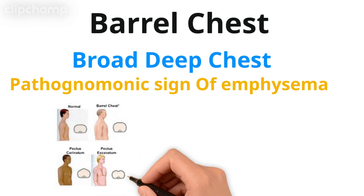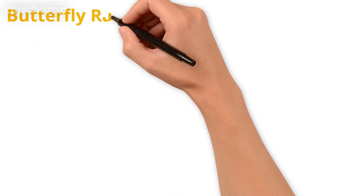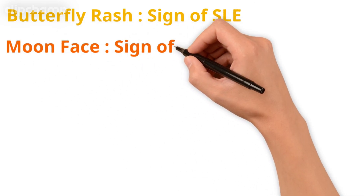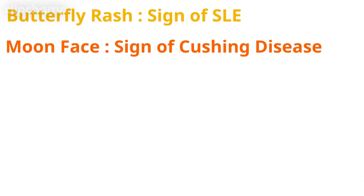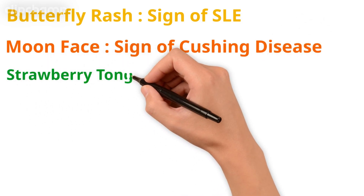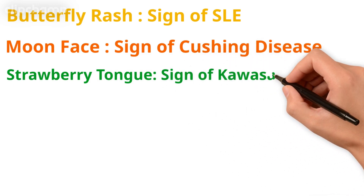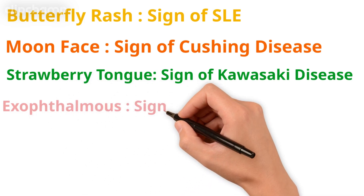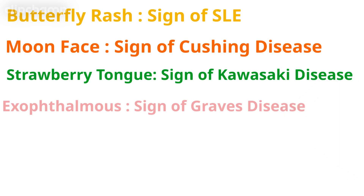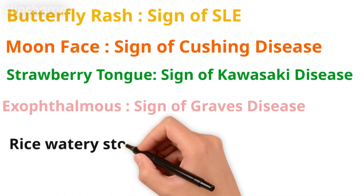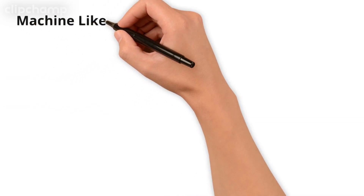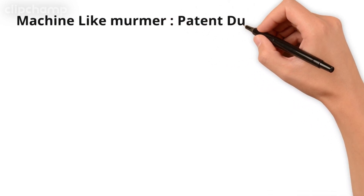Next, some pathognomonic symptoms: butterfly rash in SLE (systemic lupus erythematosus), moon facies in Cushing's disease, strawberry tongue in Kawasaki disease — it is pathognomonic of Kawasaki. Next, exophthalmos is the most important endocrine sign in Graves' disease. Rice watery stools is cholera. Machine-like murmur on auscultation is the pathognomonic sign of patent ductus arteriosus.